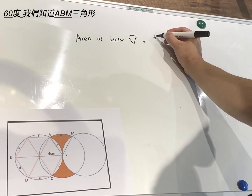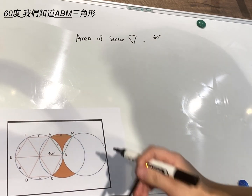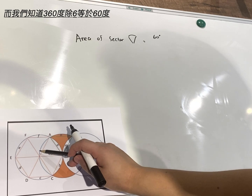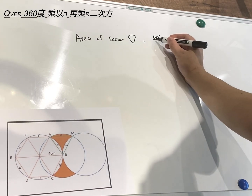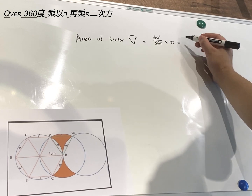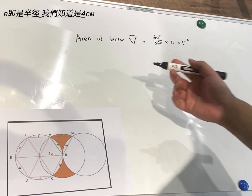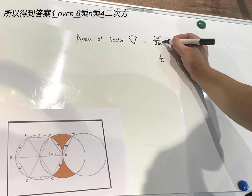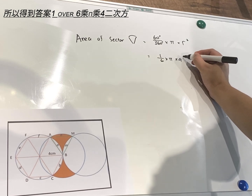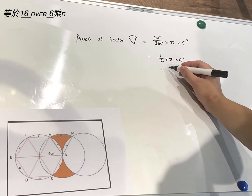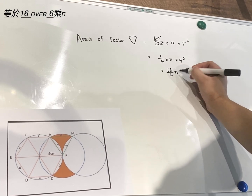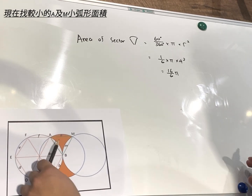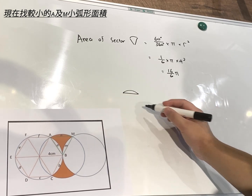First, to find the large sector area, we use the equation: 60 degrees over 360 multiplied by π multiplied by r squared. We know the angle is 60 degrees because this triangle is one of six equal triangles, and 360 divided by 6 is 60. With r equal to 4, we get 16π over 6. So that's the area of the large sector.